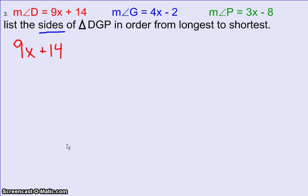9x plus 14 plus 4x minus 2 plus 3x minus 8 all have to equal 180 degrees. So now I just have an equation that I have to simplify and solve for x and that will help me. So let's go ahead and clean up this left hand side. Combine like terms.